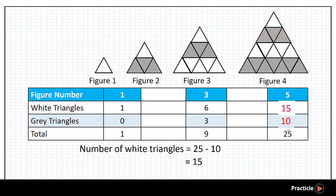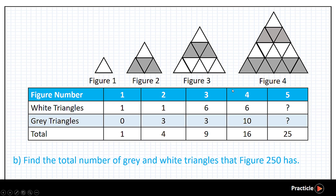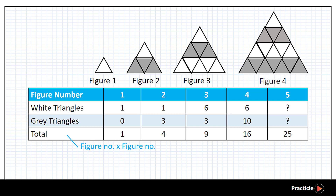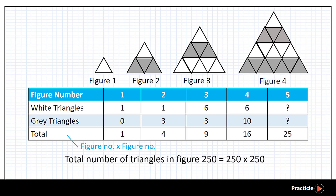Now let's move on to part B — finding the total number of grey and white triangles in figure 250. This should be simple. Remember that the total number of triangles in any figure can be found by multiplying the figure number by itself. So we take 250 times 250, giving us a total of 62,500 grey and white triangles. That's a lot of triangles!